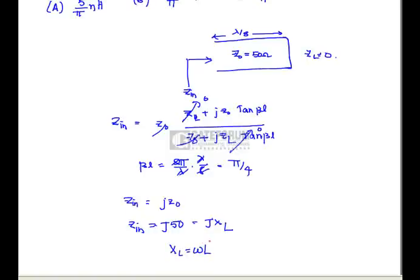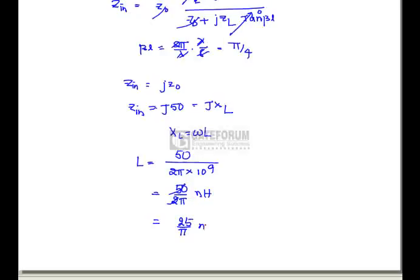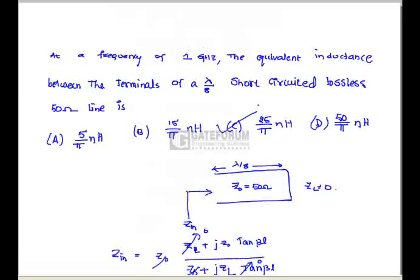Comparing Z_in = j50 with Z_XL = jωL, we solve for L: L = 50 / (2π × 10⁹) = 50/(2π) nanohenries = 25/π nanohenries. Option C is correct.